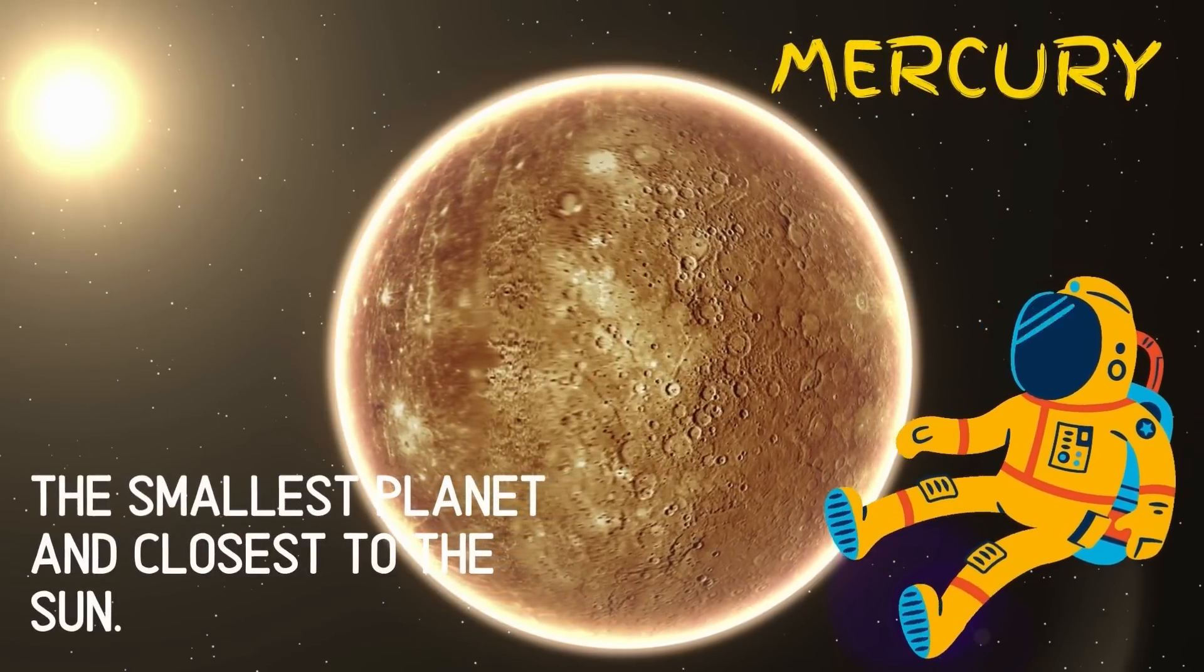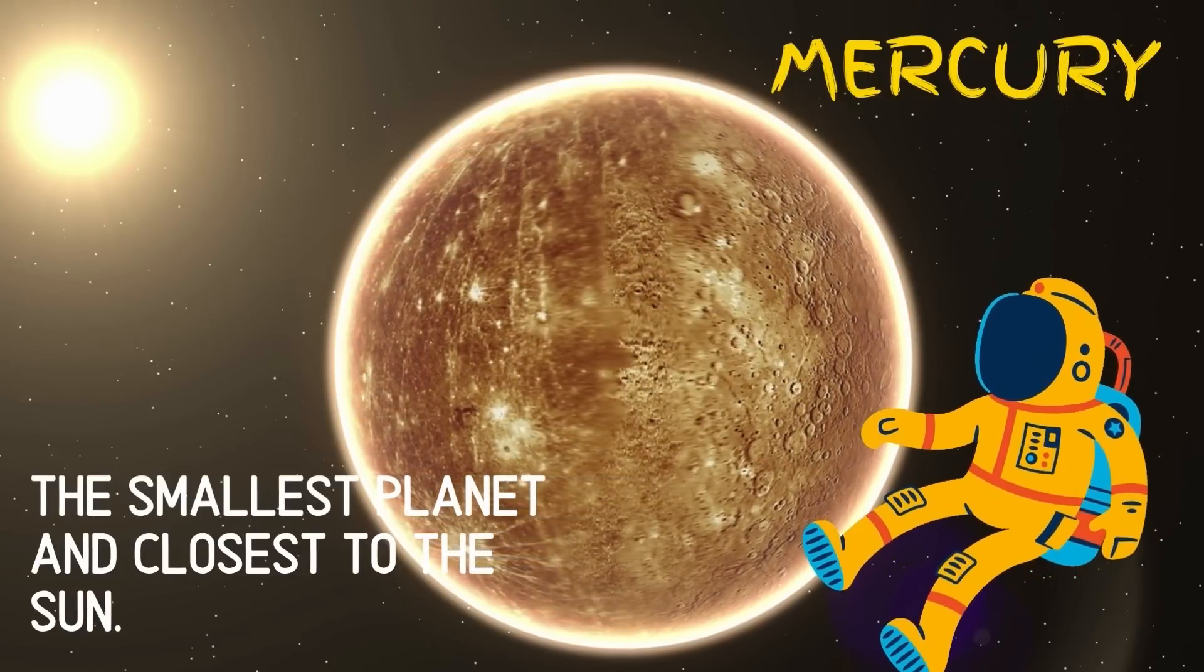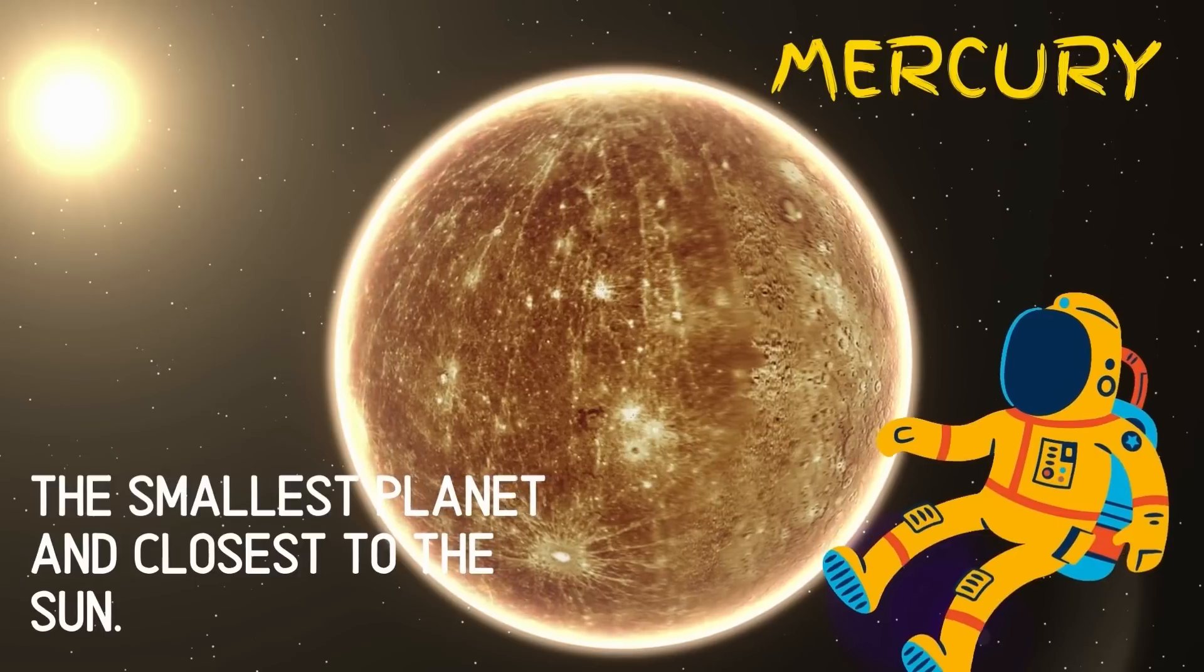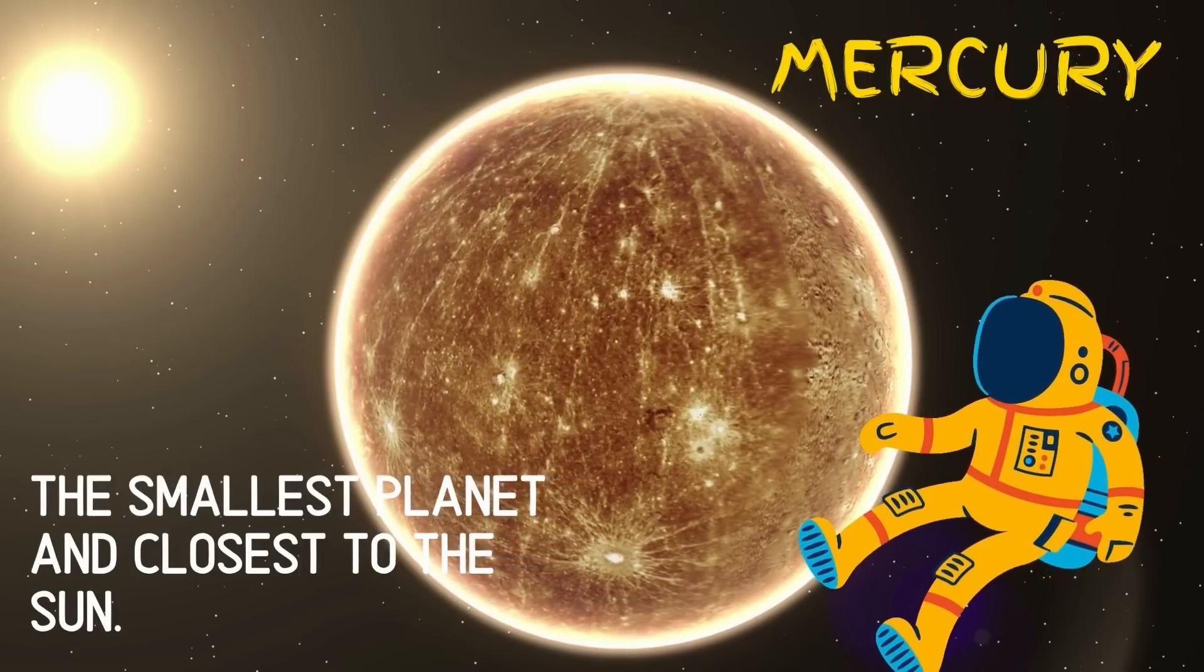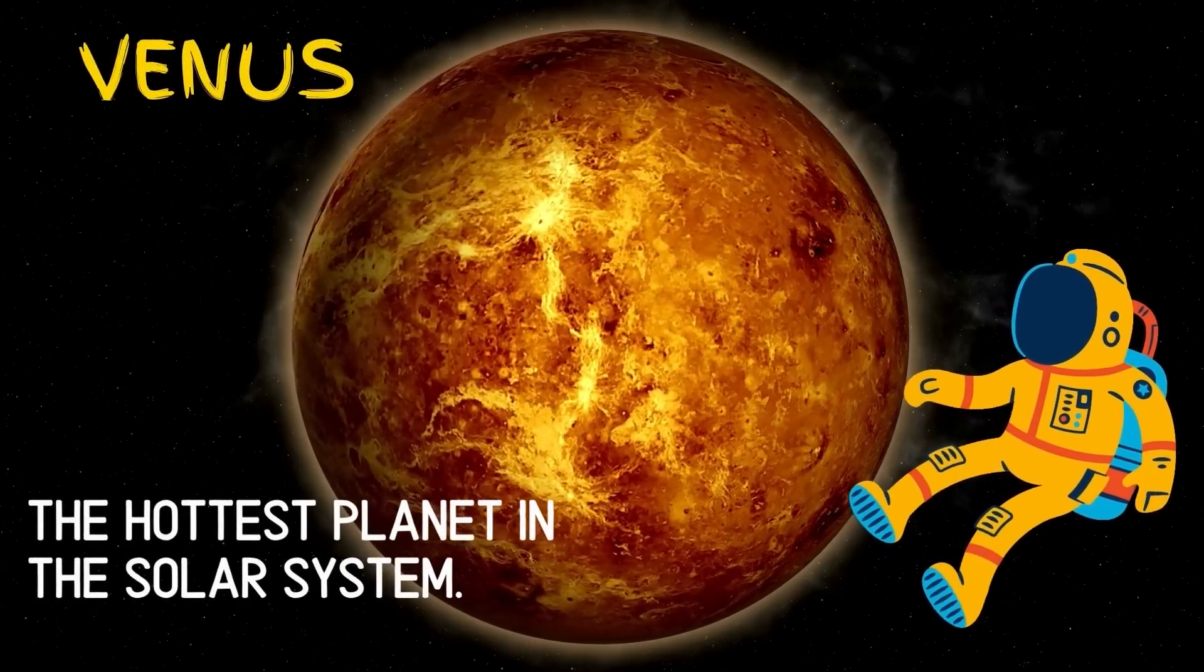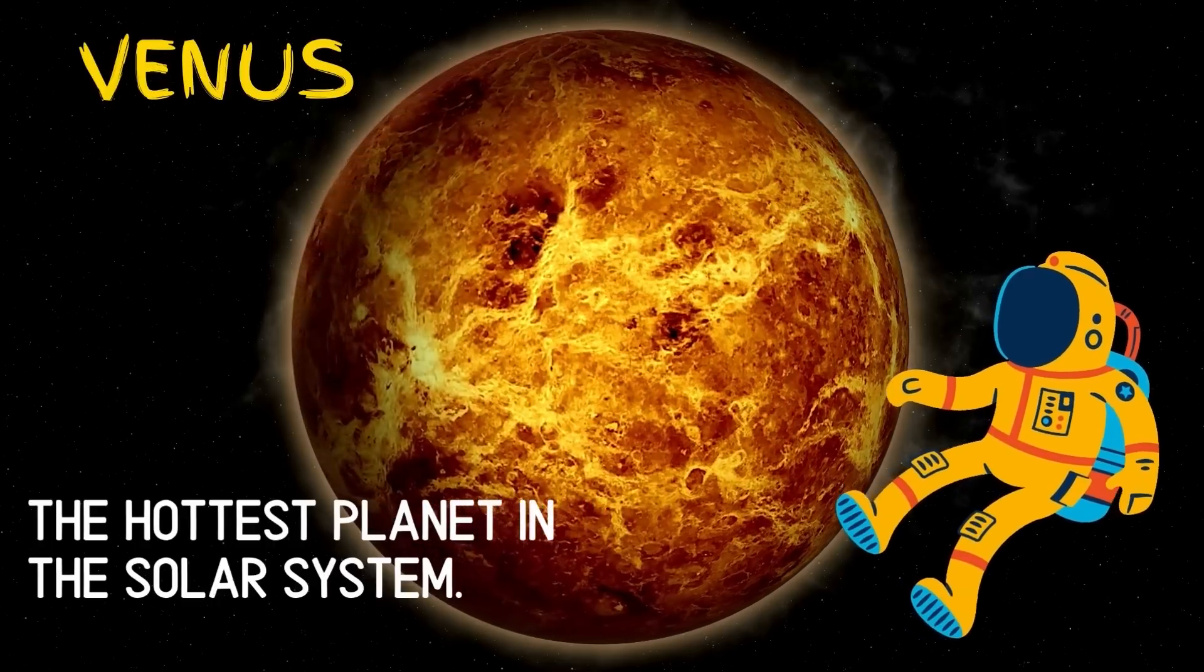Mercury is the number one planet from the sun. Mercury is the smallest and the closest planet to the sun. It is slightly larger than the moon. Venus is the second planet from the sun. It is the hottest planet of the solar system.